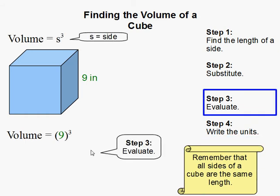And then we simply evaluate it, and 9 cubed is, as you can recall, 9 times 9 times 9, which turns out to be 729.